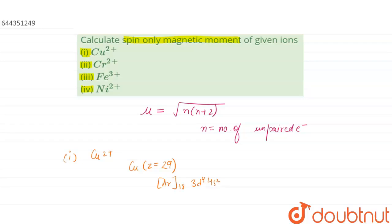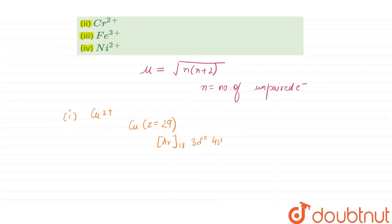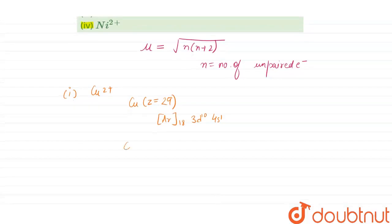Which due to stability becomes 3d¹⁰ 4s¹. After removing 2 electrons, Cu²⁺ becomes [Ar]₁₈ 3d⁹ 4s⁰, taking 1 from S and 1 from d.